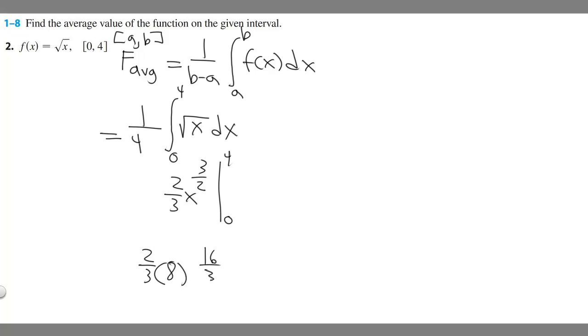8 times 2 is 16, so 16 over 3. So we have 16 over 3, and then that's going to be that, and then we plug in 0. 16 over 3 minus 0 is just 16 over 3.